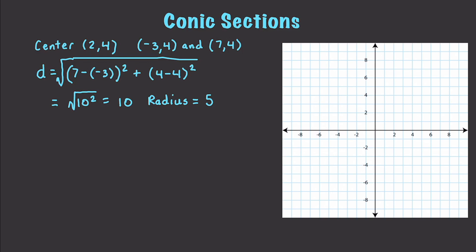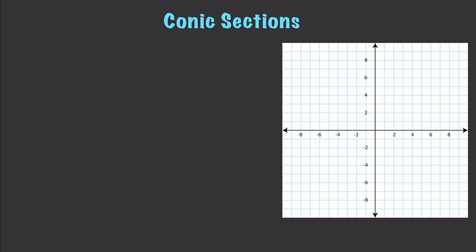And of course we could easily plot this. We know our center point is at (2, 4), and we know our radius is equal to 5. So that's going to put a point out here, a point over here, a point up here, a point down here at negative 1, and then we could just come in and draw in our circle. Now of course we do not need all of those points to be able to plot a circle. This is the basic formula for a circle: if you have a center point of (h, k) with a radius r, then your formula is going to be (x - h)² + (y - k)² = r².